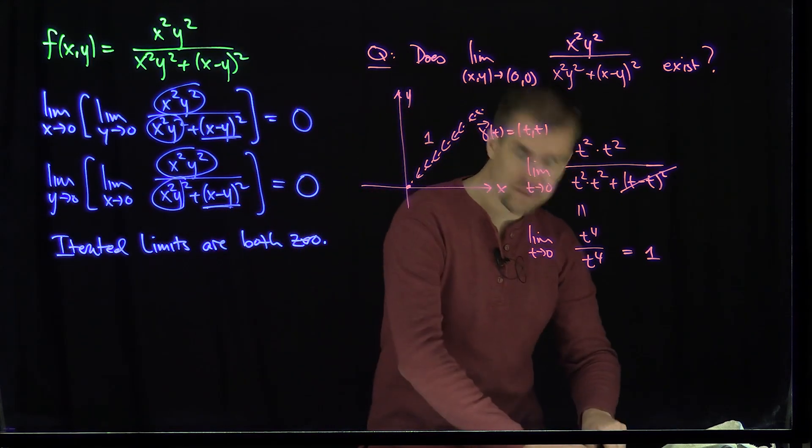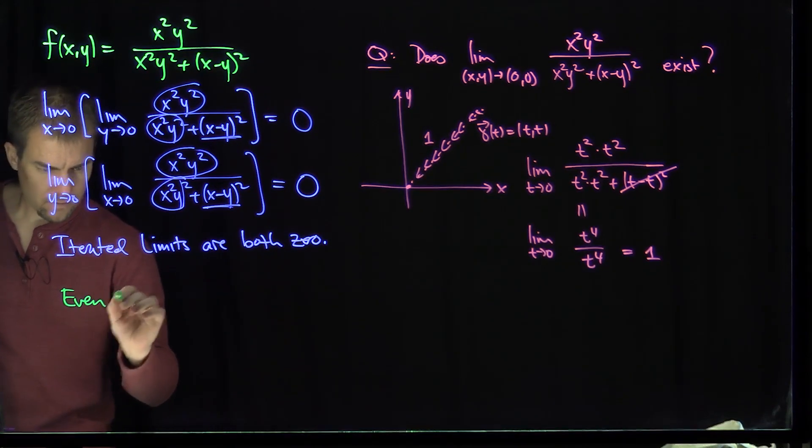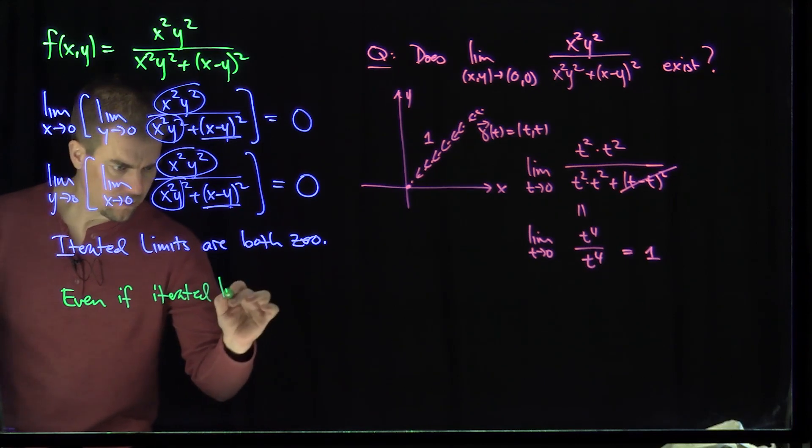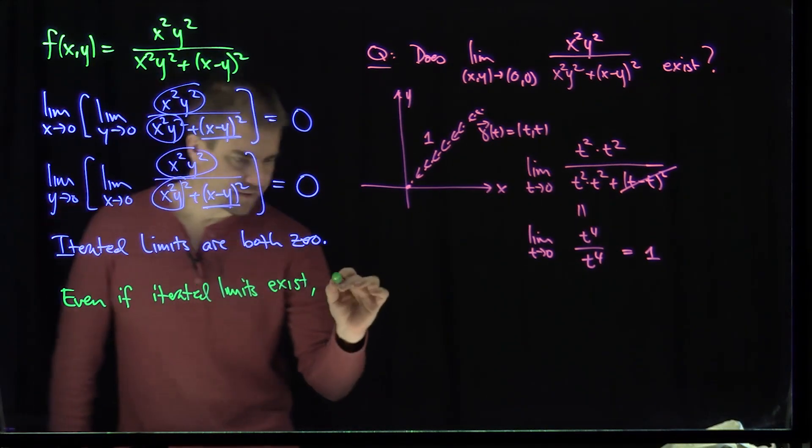So this example shows us the following: it says that even if the iterated limits exist, the limit itself might not.